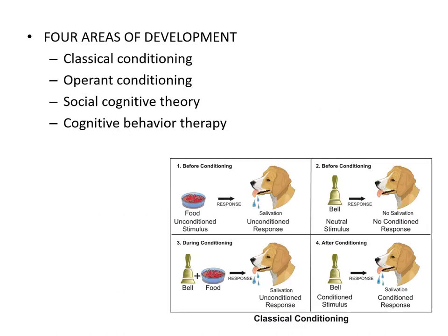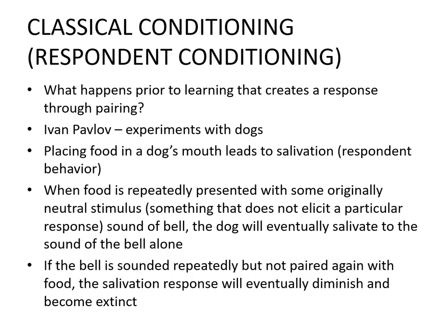There are four areas of development: classical conditioning, operant conditioning, social cognitive theory, and cognitive behavior therapy. Classical conditioning asks: what happens prior to learning that creates a response through pairing? Pairing means two things put together. The most famous example is Ivan Pavlov and his experiments with dogs — he placed food in a dog's mouth, which leads to the dog salivating. When food is repeatedly presented with an originally neutral stimulus, neutral meaning it doesn't cause anything on its own, such as the sound of a bell, the pairing begins.